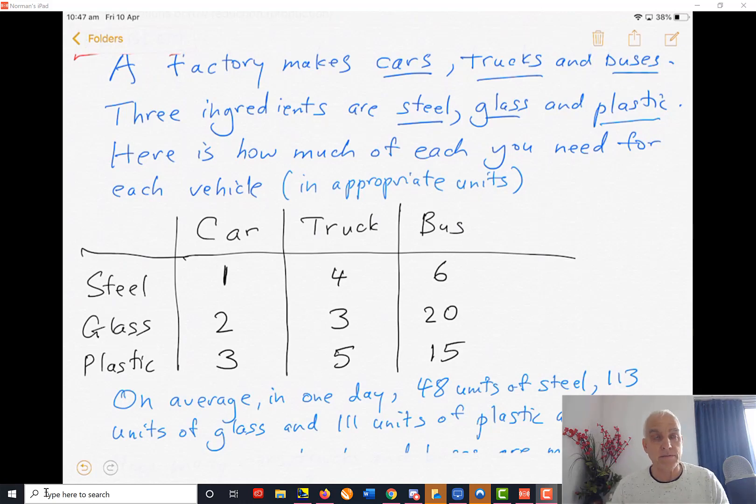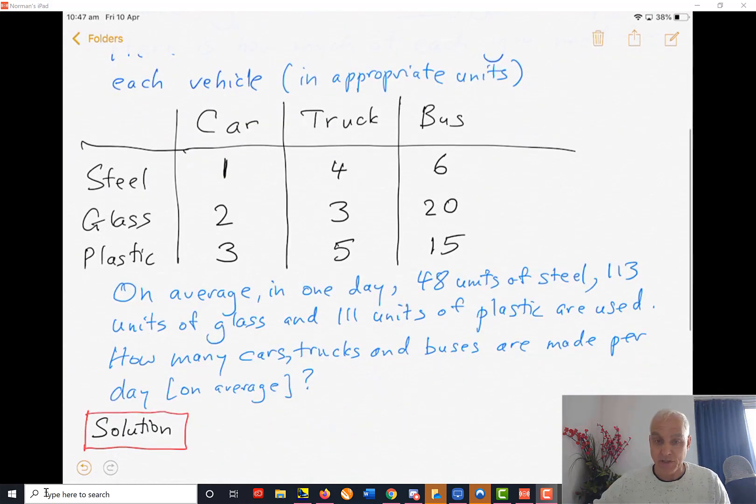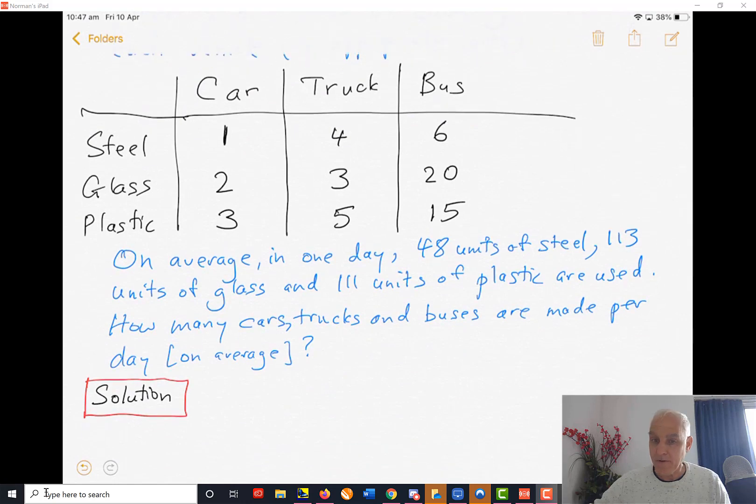Now we are also told that on average in one day, 48 units of steel, 113 units of glass, and 111 units of plastic are used. And we want to deduce from this how many cars, trucks, and buses are made per day on average.